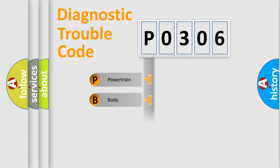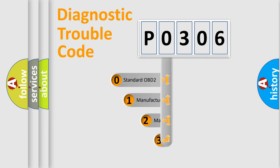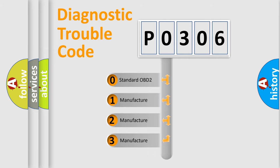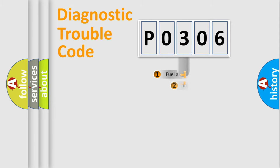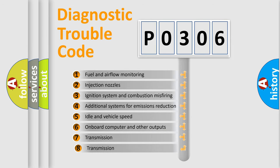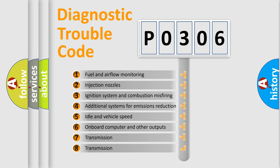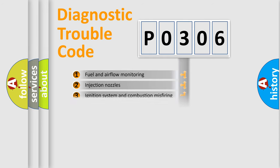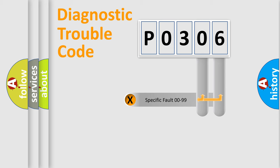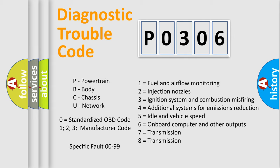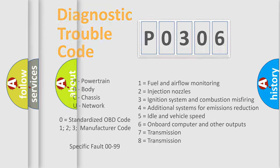Powertrain, Body, Chassis, Network. This distribution is defined in the first character code. If the second character is zero, it is a standardized error. In the case of numbers 1, 2, or 3, it is a manufacturer-specific error. The third character specifies a subset of errors. The distribution shown is valid only for standardized DTC codes. Only the last two characters define the specific fault of the group. This division is valid only if the second character code is zero.